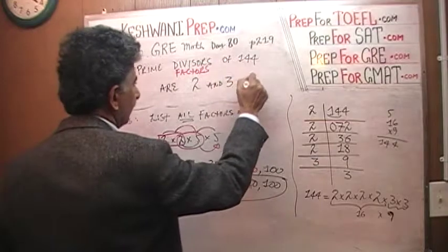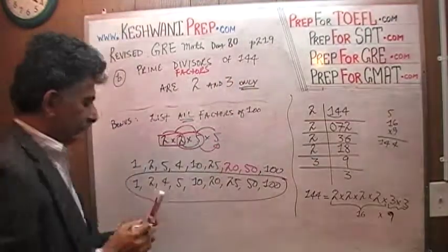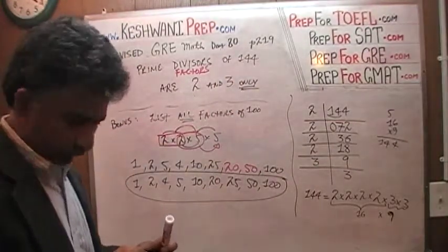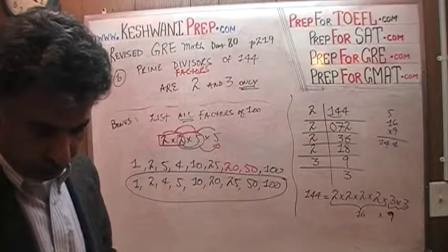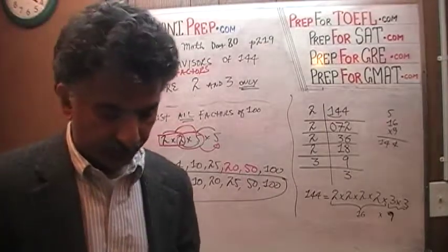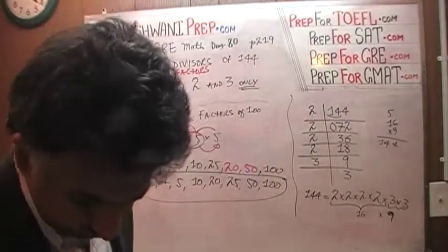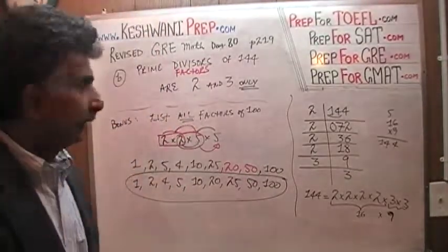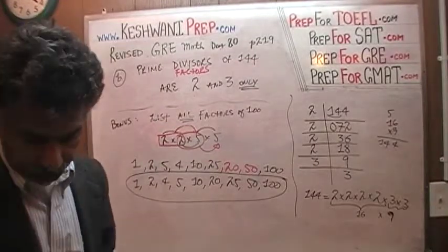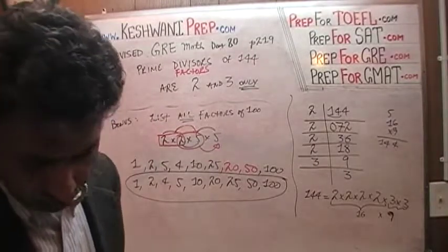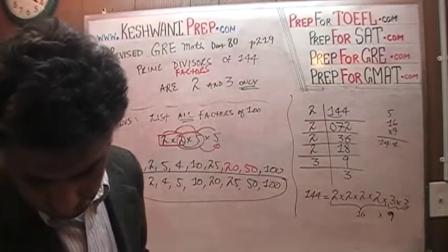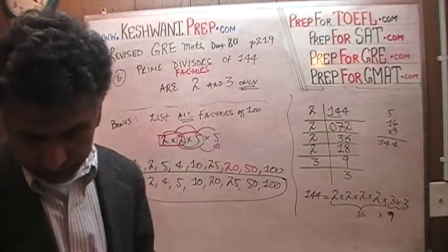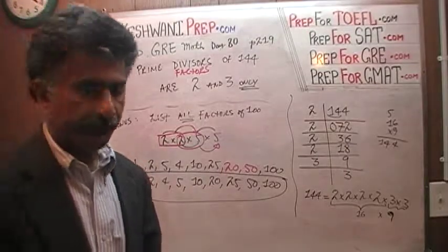That's it — 144 has only 2 prime factors, just like 100 had only 2 and 5. I will see you tomorrow on day number 81. Bye now.